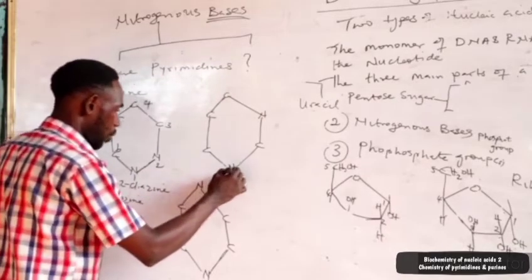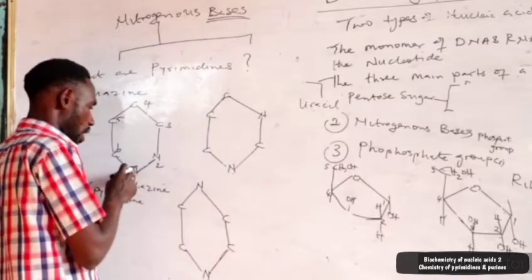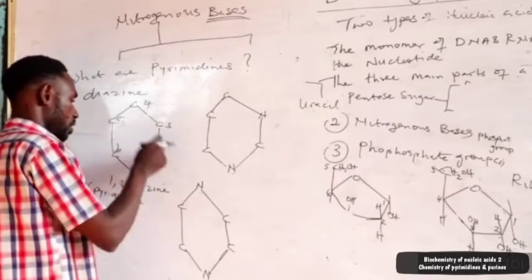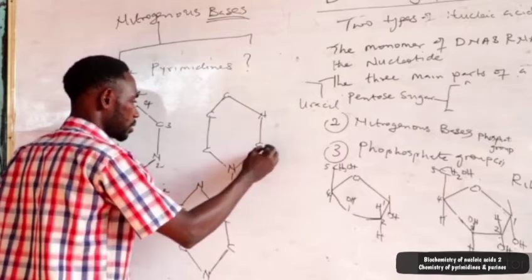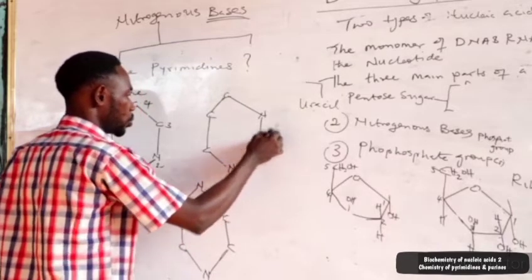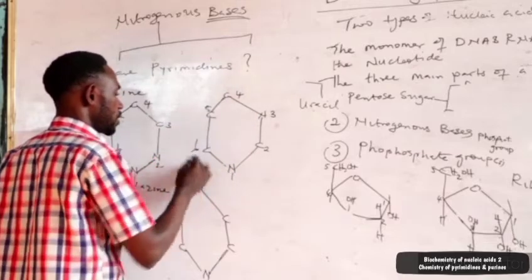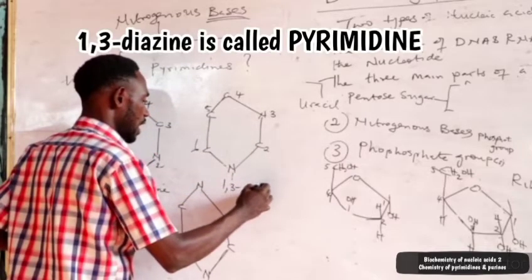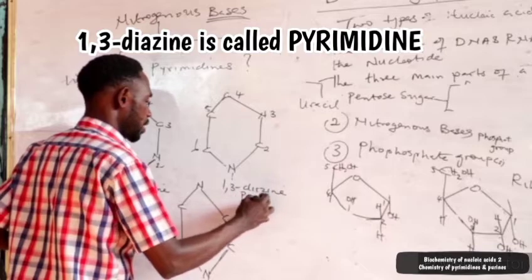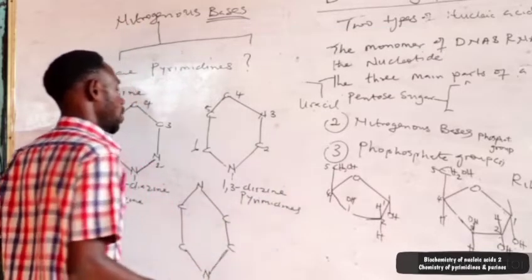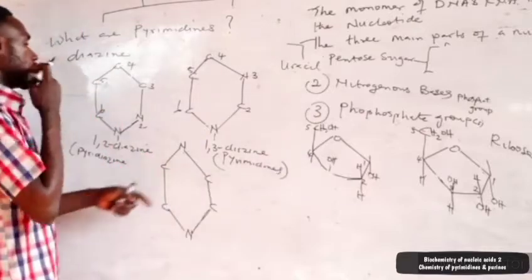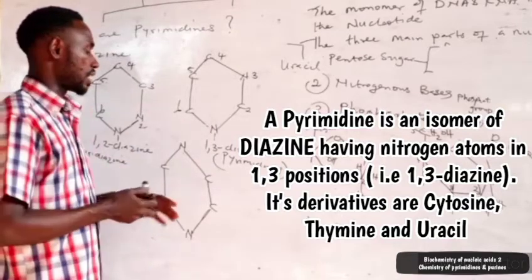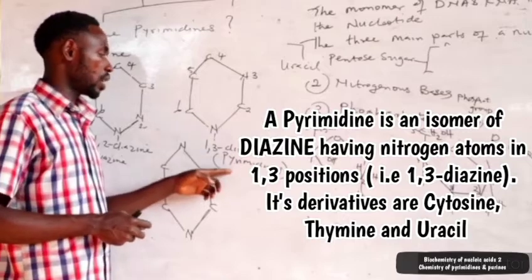Starting from position one and counting: one, two, three, four, five, six — when the nitrogen occurs at number one and three, that is the 1,3 diazine. The 1,3 diazine is what we call pyrimidine. Pyrimidine is simply an isomer of diazine that has the nitrogen atoms in the 1,3 position. That is what we call pyrimidine.